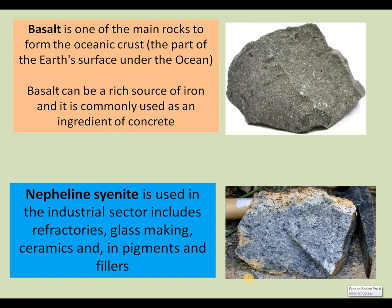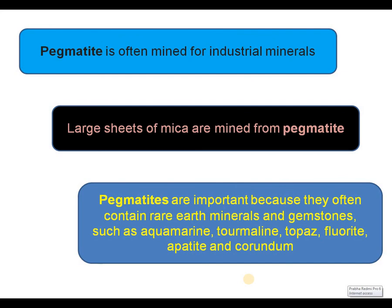Basalt is one of the important igneous rocks forming the oceanic crust. Basalt can be a rich source of iron and is commonly used as an ingredient in concrete. Nepheline syenite is used in the industrial sector for refractories, glass making, ceramics, pigments, and fillers. Pegmatite is often mined for industrial minerals; large sheets of mica are mined from pegmatites. Pegmatites are important because they often contain rare minerals.